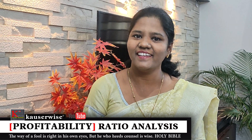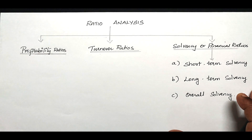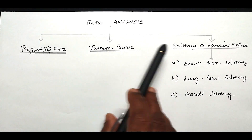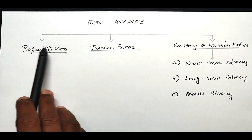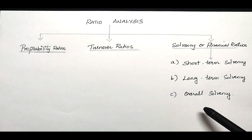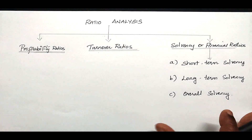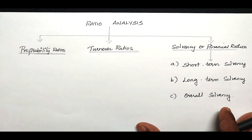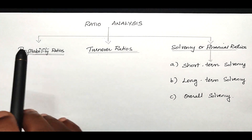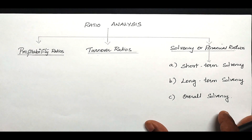Hi, welcome to my channel. This is Kouser Weiss. In this series we are going to see ratio analysis. In that we have three divisions: profitability ratios, turnover ratios and solvency ratios. We are going to see one by one along with the numerical problem. You can find the playlist link in the description box. Now in this video we are going to see the first one, that is profitability ratios.